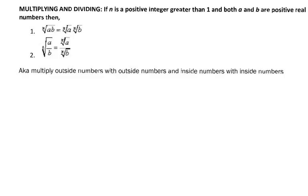Here are notes for multiplying and dividing. When we were adding and subtracting, you didn't touch what was underneath the radical symbol. Here though, you're going to multiply outside numbers with outside numbers and inside numbers with inside numbers. Same with dividing — you divide numbers outside the radical symbol and numbers inside the radical symbol. Let's look at some examples.